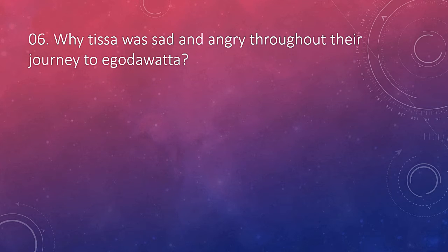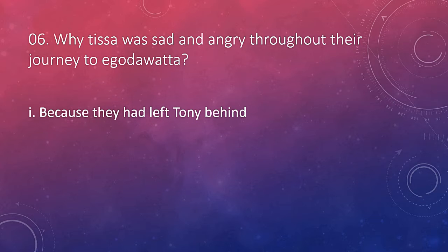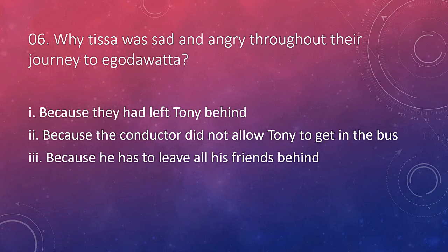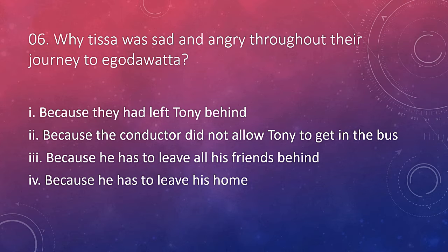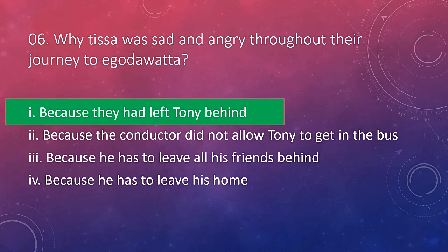Why was Thyssa sad and angry throughout their journey to Egodavata? He was not angry because they left their old house and family surroundings, but because he had to leave his companion — a dog brought to the house as a small puppy — who had lived with them for a long period of time like a family member. As the story reveals, Thyssa had little human companions, and leaving his only companion behind made him very sad. So the answer is because they had left Tony behind.